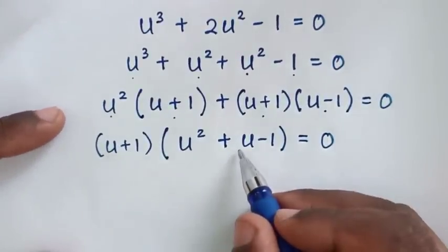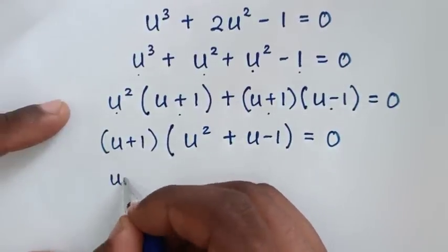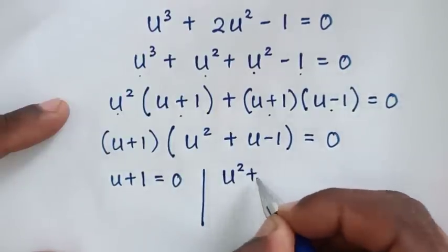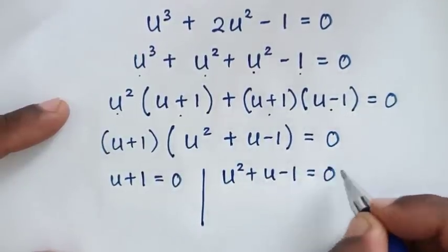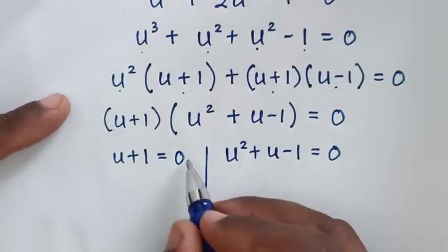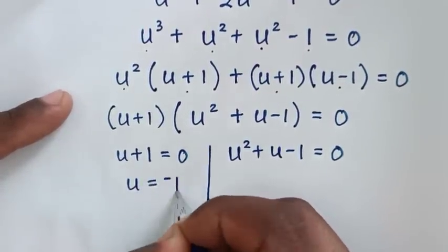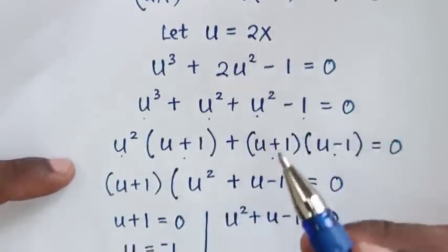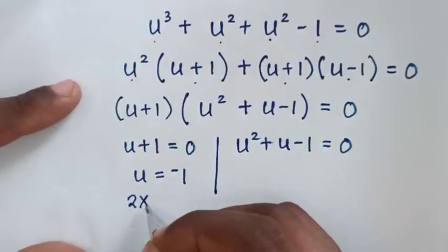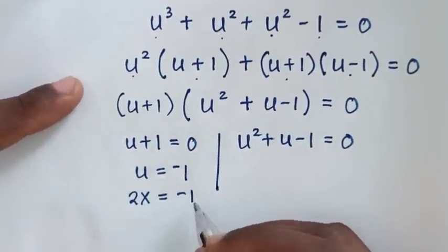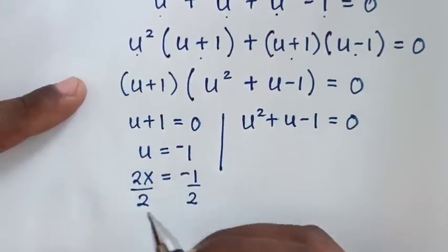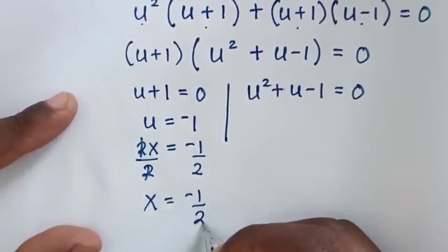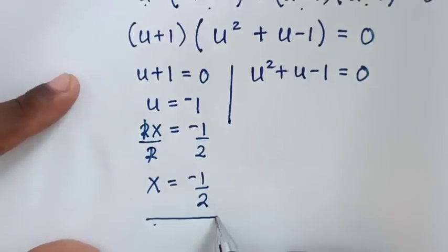We now have two solutions. The first solution is u + 1 = 0, and the second is u² + u - 1 = 0. From the first, u = -1. Recalling that u = 2x, we substitute to get 2x = -1. Dividing both sides by 2 gives x = -1/2. This is the first value of x.